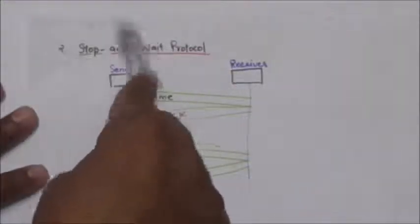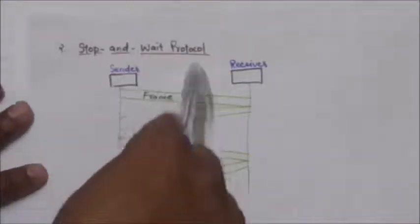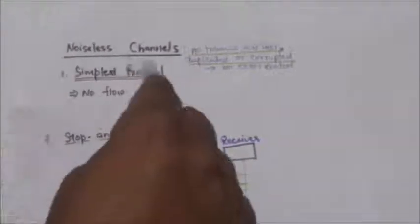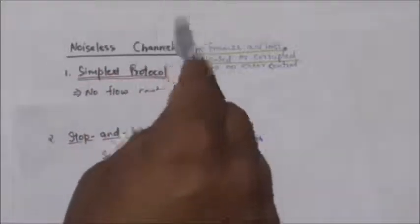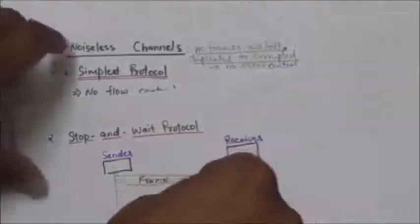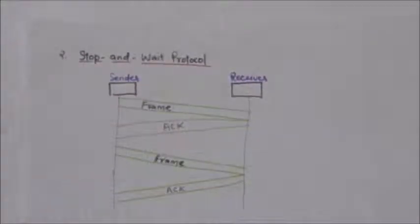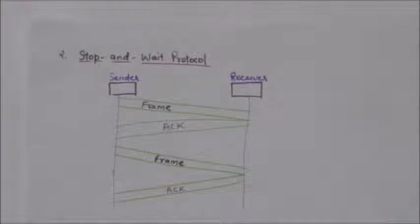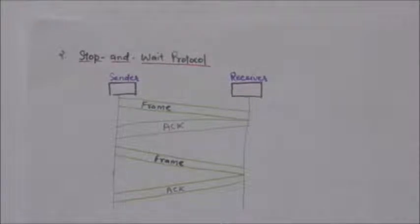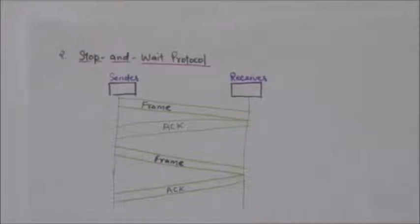The next protocol for noiseless channels is the Stop-and-Wait Protocol. Unlike the Simplest Protocol, this Stop-and-Wait Protocol has flow control. When data frames arrive at the receiver site faster than they can be processed, these frames must be stored until they are used. If the receiver does not have enough storage space, especially when receiving data from many sources, this may result in discarding of frames or denial of service.